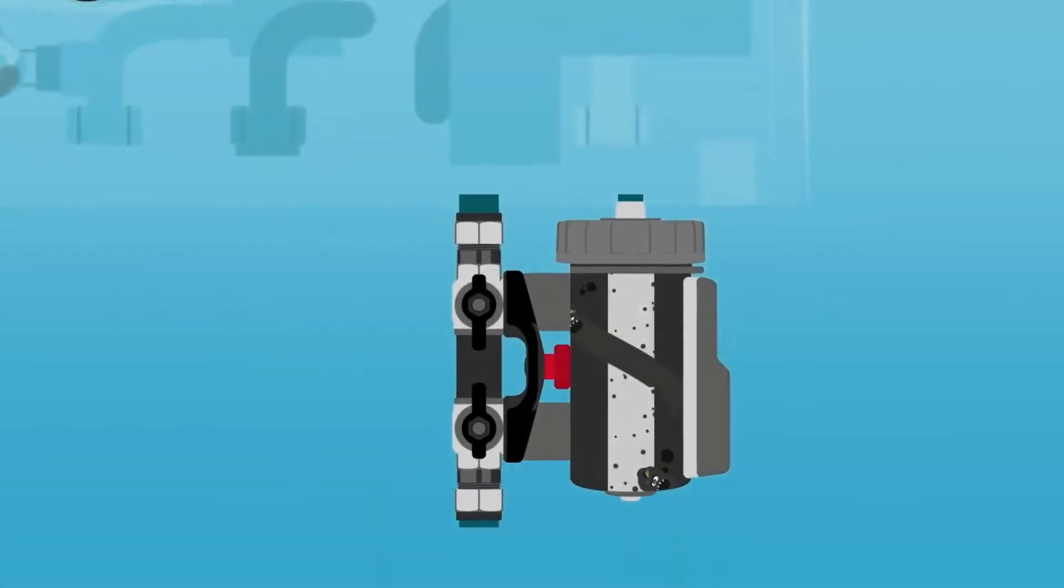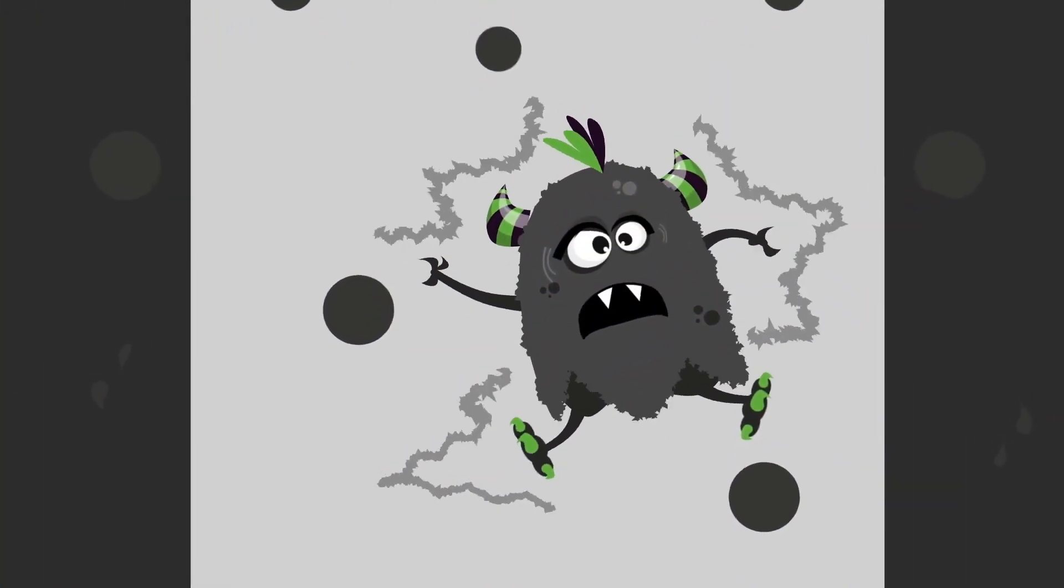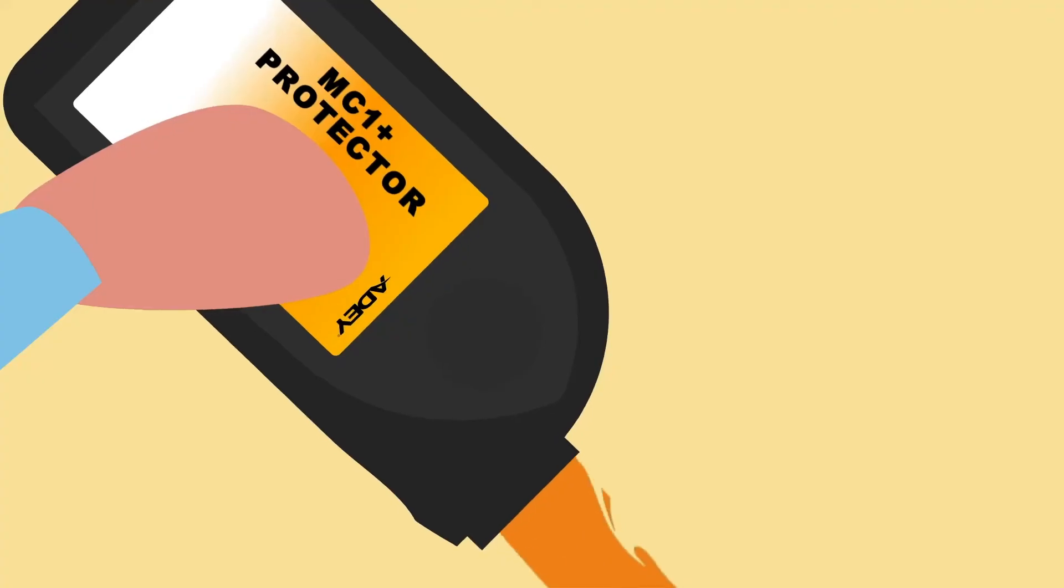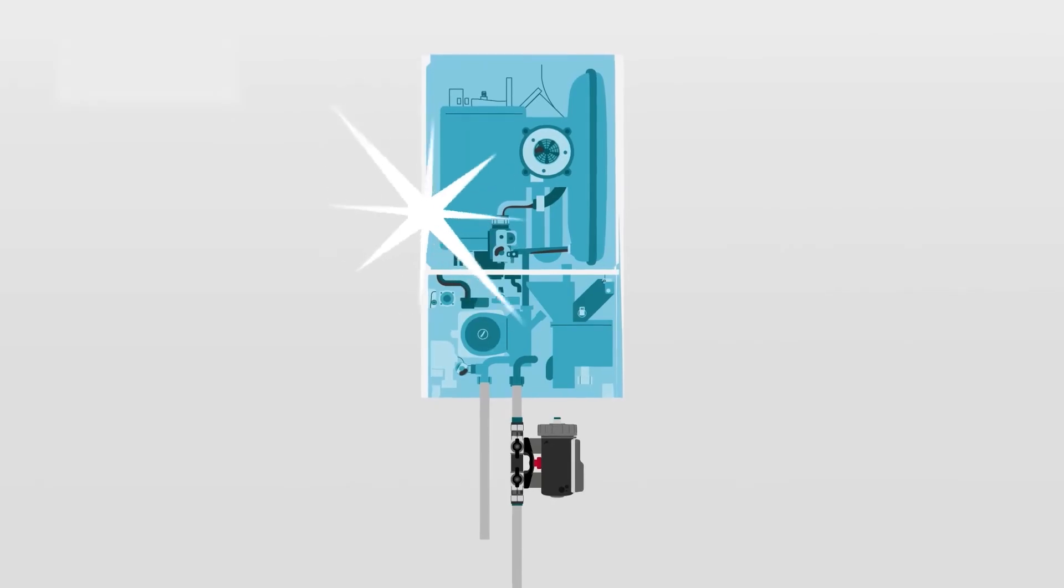To protect your heating system from sludge damage, fit an AD MagnaClean filter. It captures sludge no matter how hard he tries to escape, and stops him rampaging through your system. Adding an inhibitor keeps sludge at bay, stopping him returning.